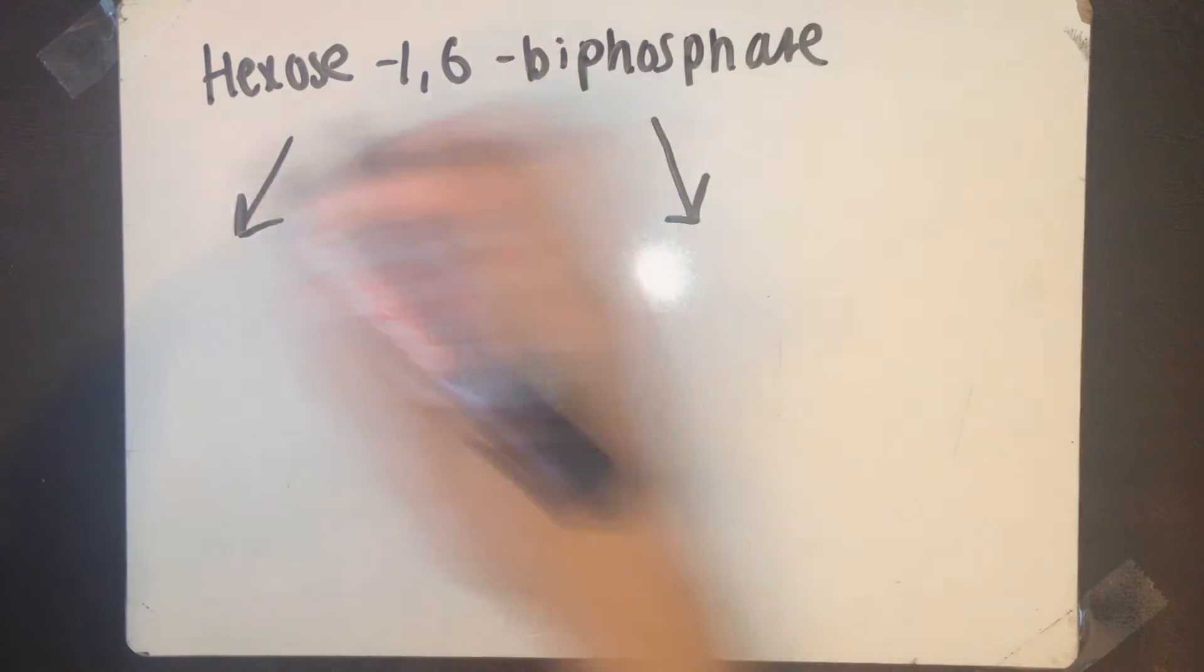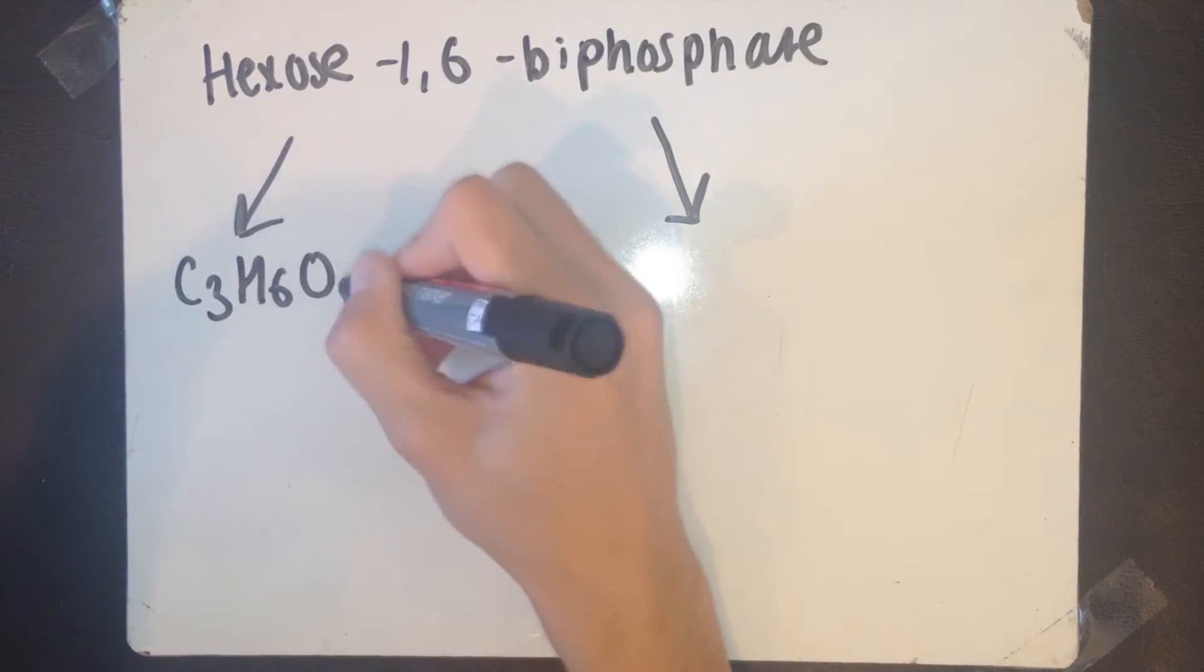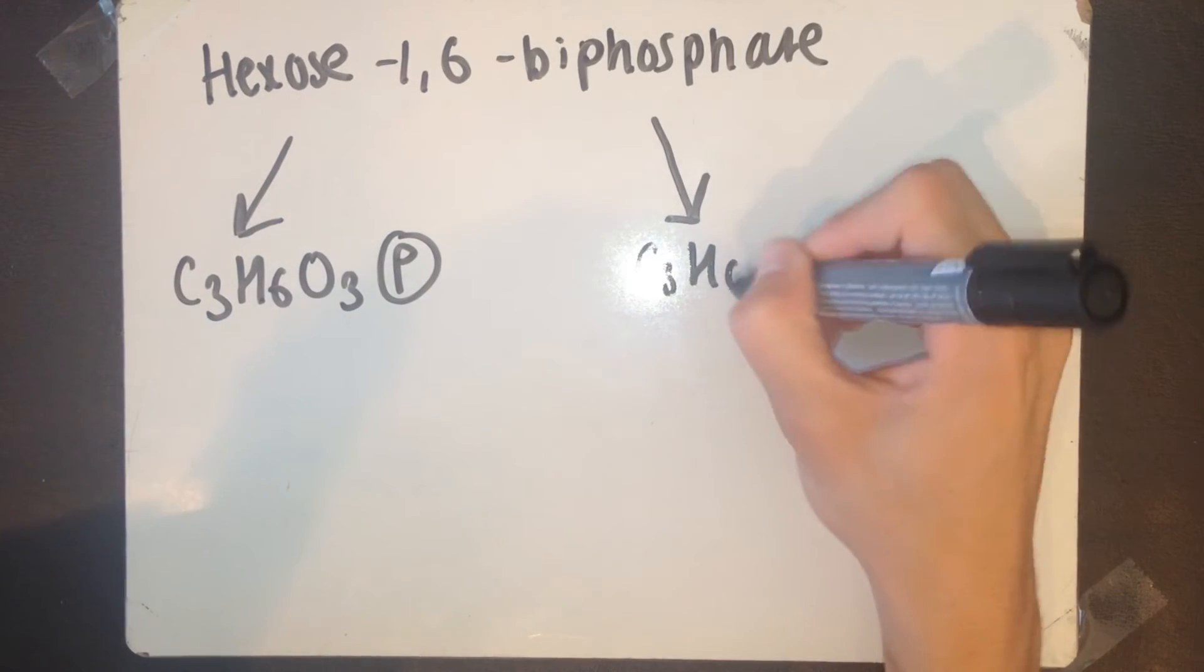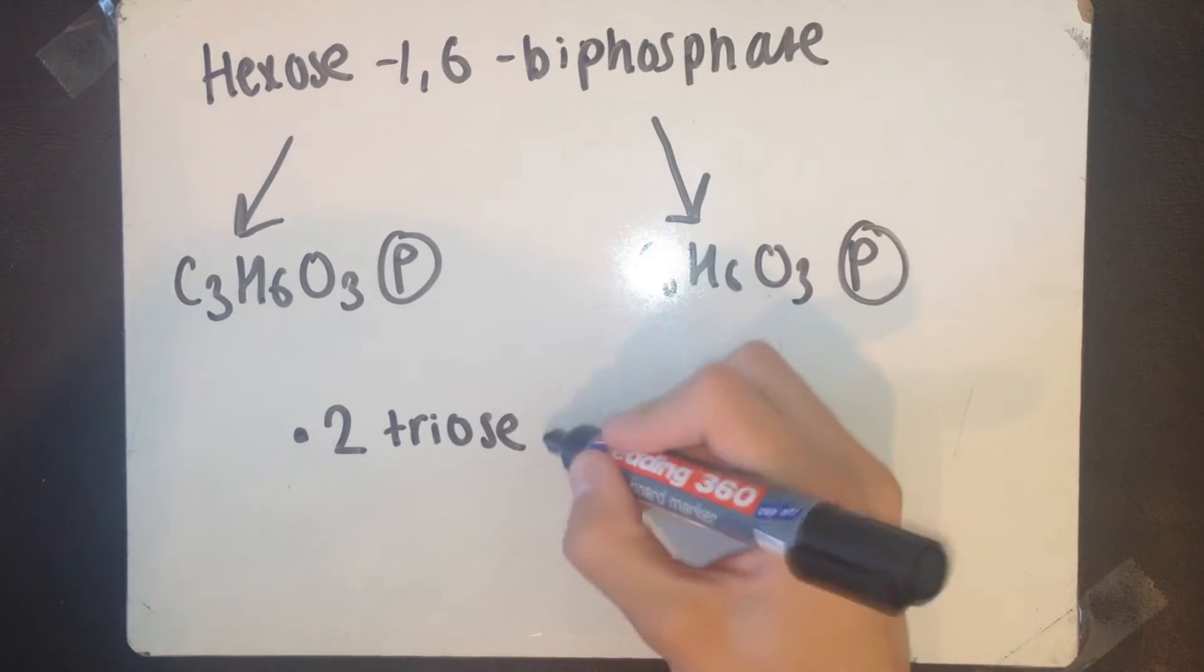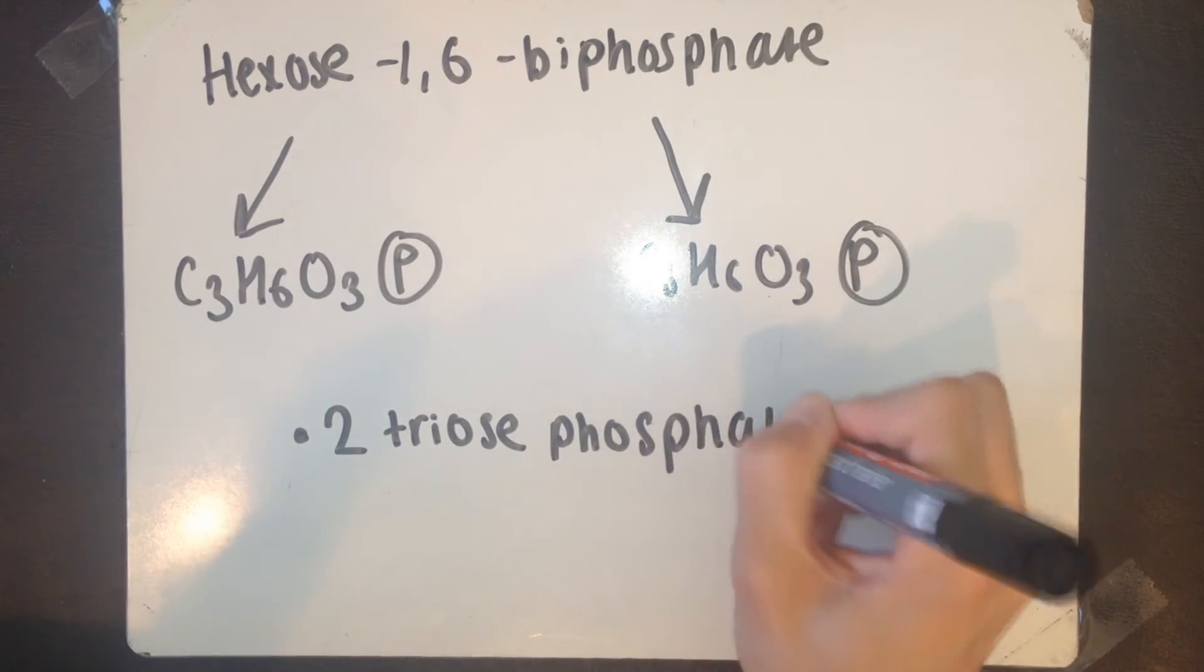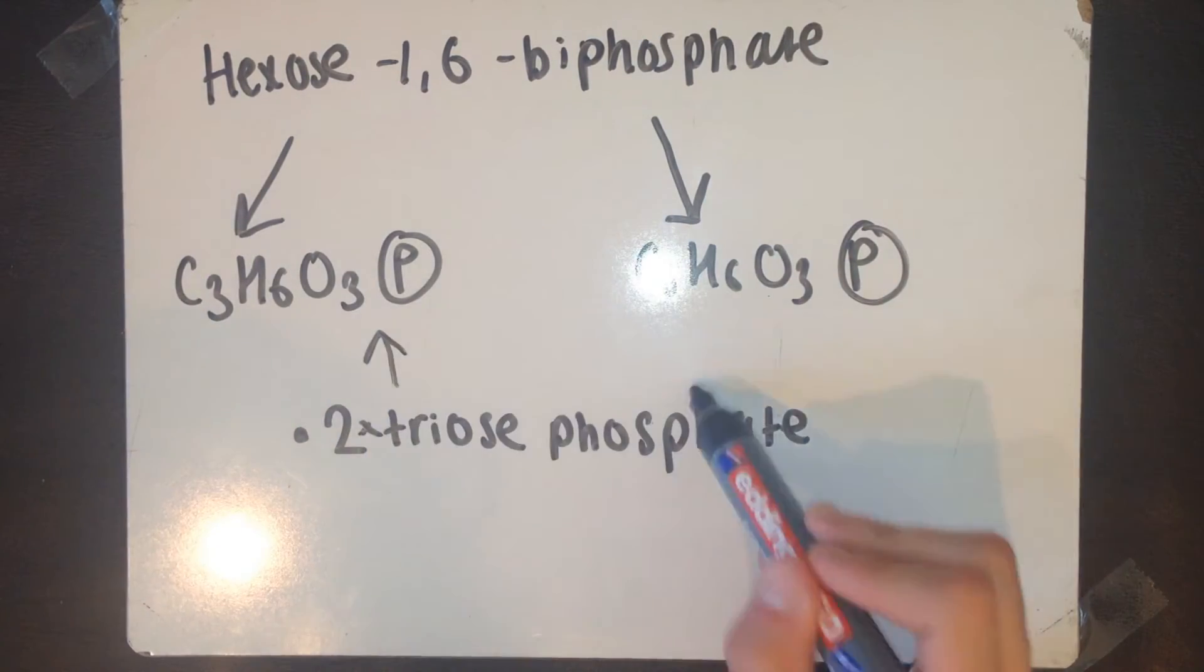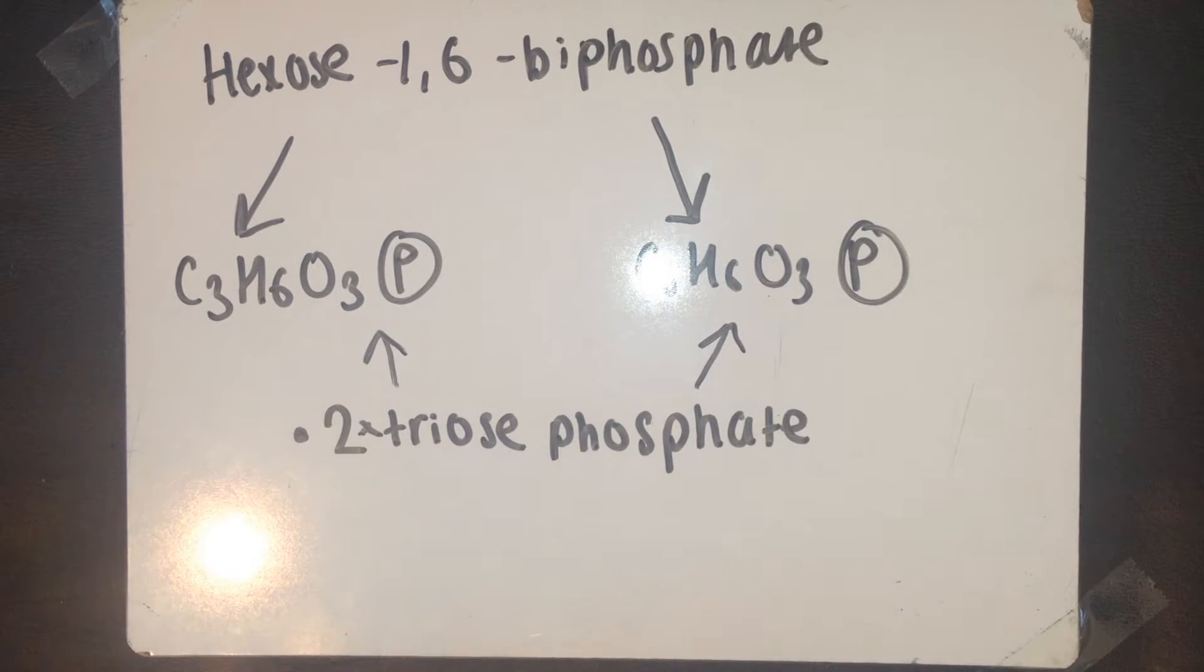I'll tell you anyway, we've got glyceraldehyde 3-phosphate and dihydroxyacetone phosphate. These molecules don't have the same structure but they do have the same formula. As you know, hexose is C6H12O6, so obviously if you've got half of that, they've got to have C3H6O3.